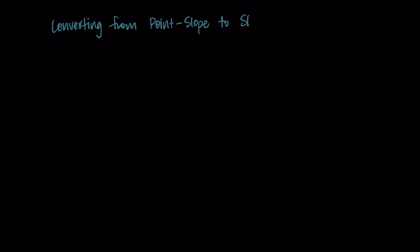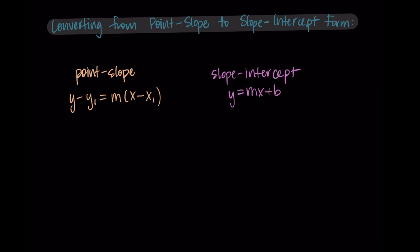Hi, and welcome back. In this video, we're going to talk through how we convert from point-slope form to slope-intercept form for linear functions. As a reminder, here are the formulas for our point-slope form and the slope-intercept form. When we have a point-slope form, our answers might look different from each other because we could choose any point we wanted. So we often are asked to convert our final answers into slope-intercept form, which is our universal way to represent lines.